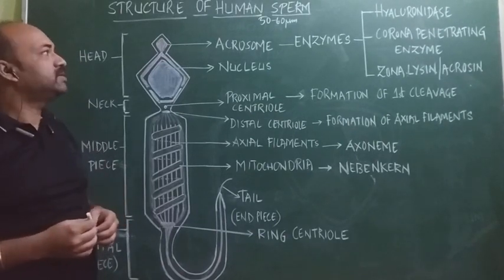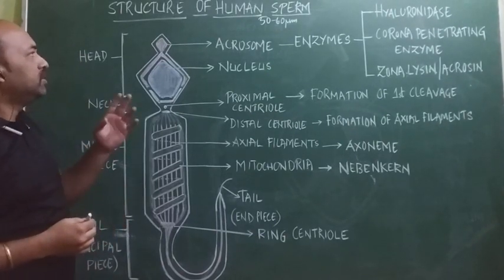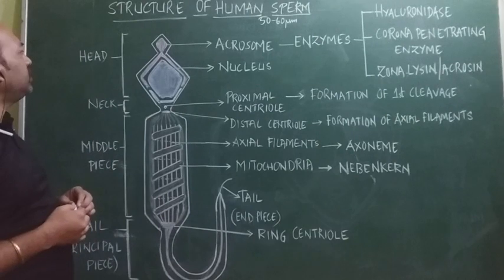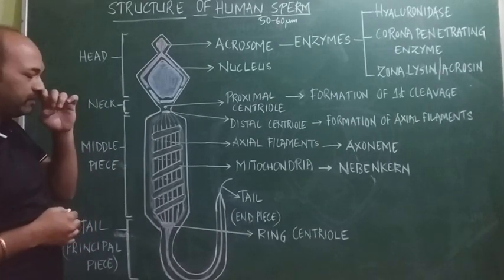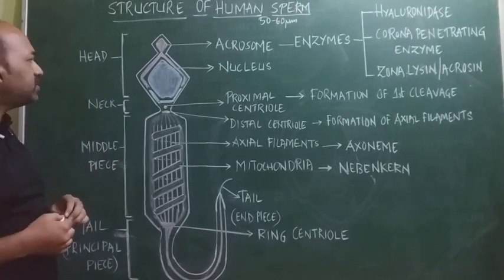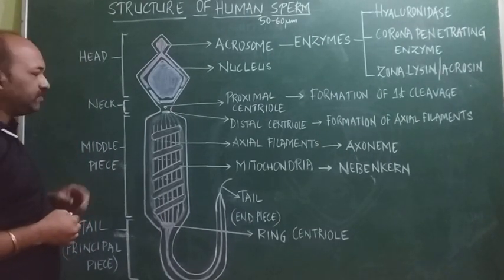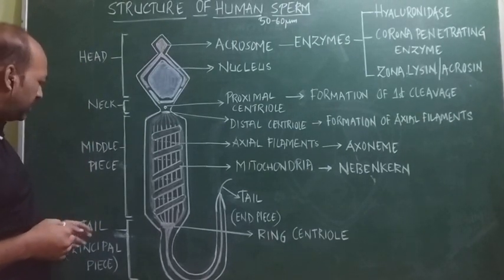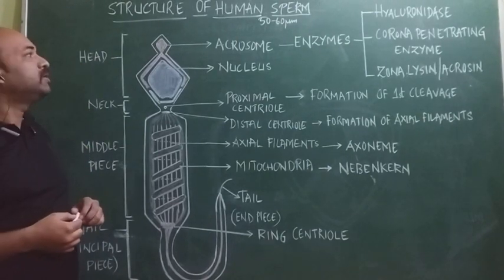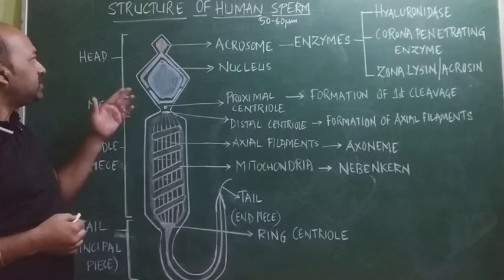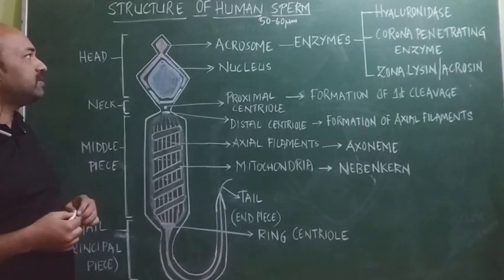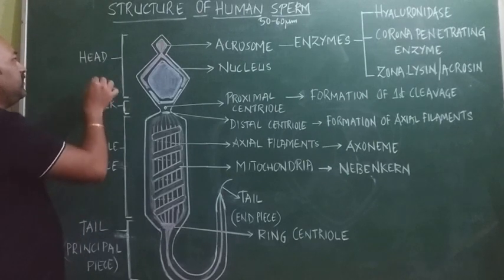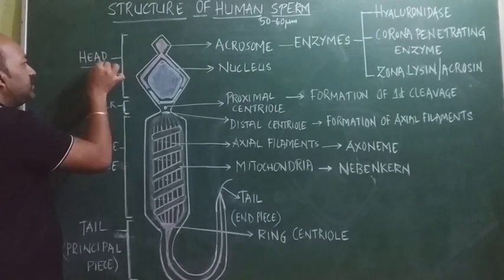The sperm, being a male gamete, has four main regions: the first one is called the head, second one is the neck, third one is the middle piece, and the last one is called the tail. Let's get into the details of the human sperm.